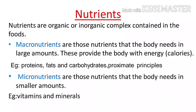Nutrients are organic and inorganic complexes. There are two types of nutrients: macronutrients and micronutrients. Macronutrients are the nutrients that the body needs in large amounts. These are protein, fat, and carbohydrate.